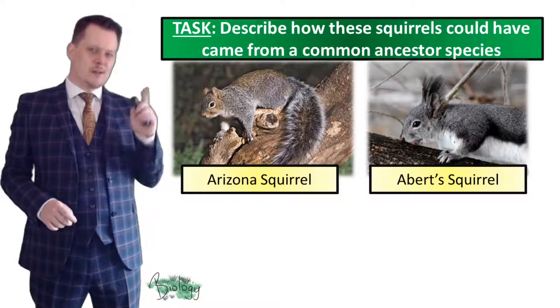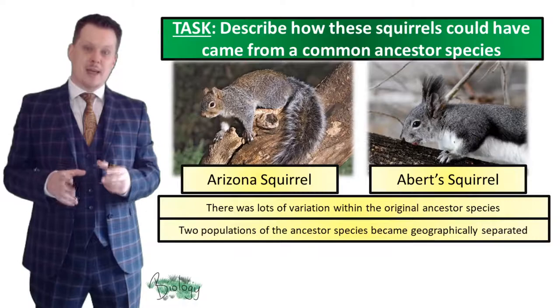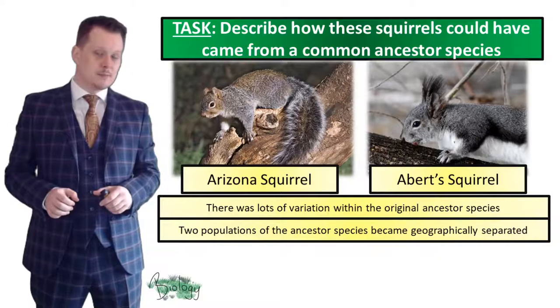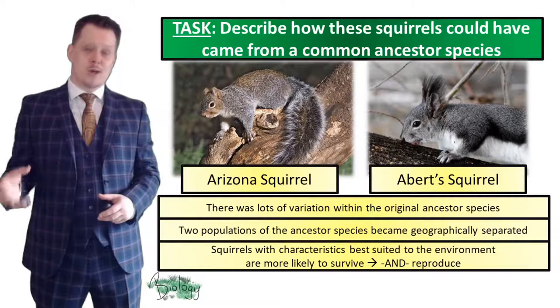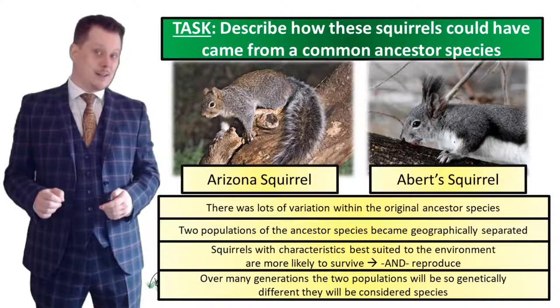Let's go through the answers, starting with the common ancestor. You need to say that there is a lot of variation within the original ancestor species. You then need to say that two populations of the ancestor species became geographically separated — they ended up in different parts of the world. Squirrels with the best characteristics suited to their environment were more likely to survive and reproduce. Then over many generations the two populations become so genetically different they will be considered different species.